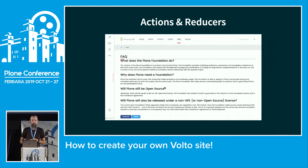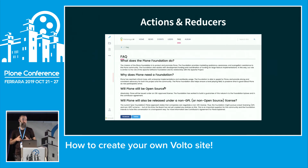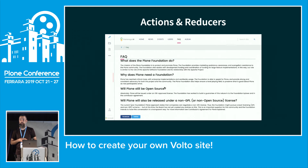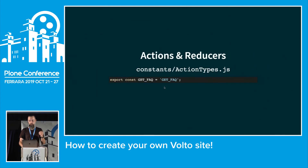The last thing to show is actions and reducers. If you're new to Redux, Redux is a state machine used extensively in Volto to fetch data from the backend and store it in local browser state — all content, breadcrumb data, navigation, everything is stored in the Redux state. If you want to add something, such as for an add-on with a specific REST API call, you can add your own actions and reducers.